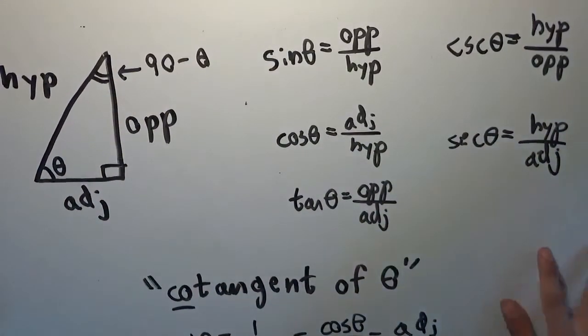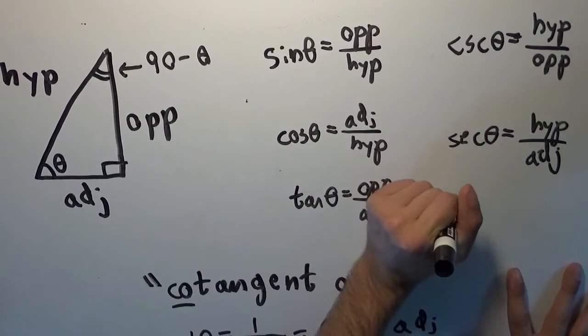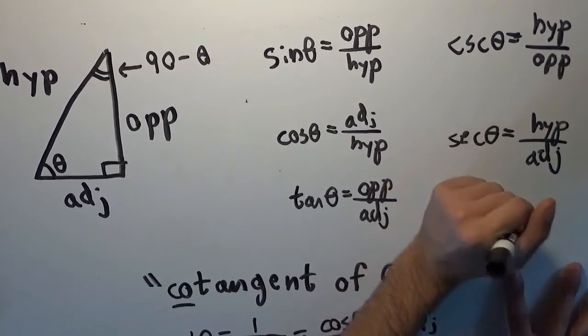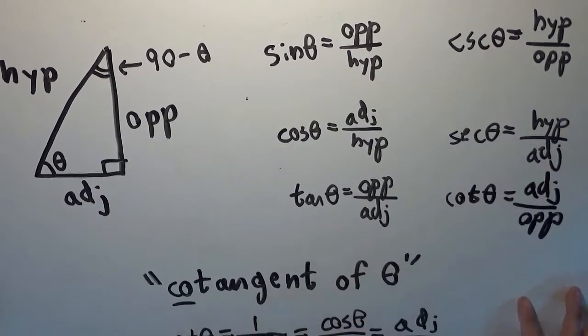So I'm going to put the cotangent here, and I'm just going to write adjacent over opposite. So we have the cotangent of theta equals adjacent over opposite.